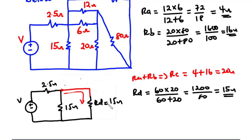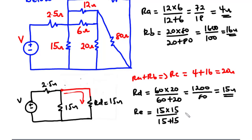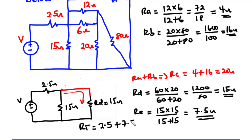After clearing Rc and the 60-ohm resistor, we have Rd of 15 ohms. This 15-ohm resistor and the other 15-ohm resistor are connected in parallel, so Re equals 15 divided by 2, which is 7.5 ohms. This 7.5 ohms will be in series with the 2.5-ohm resistor.